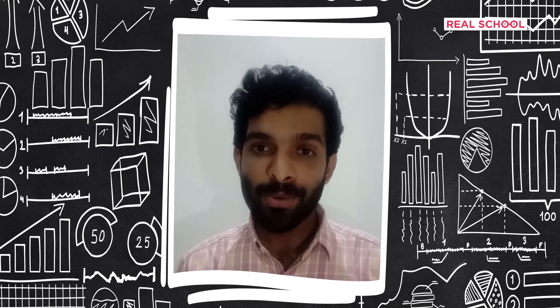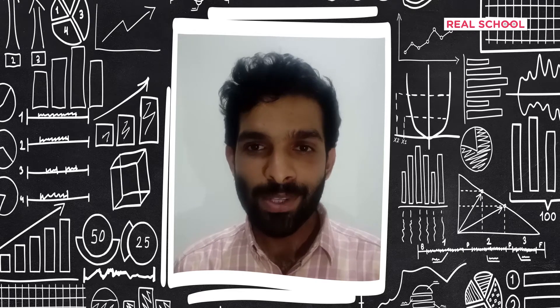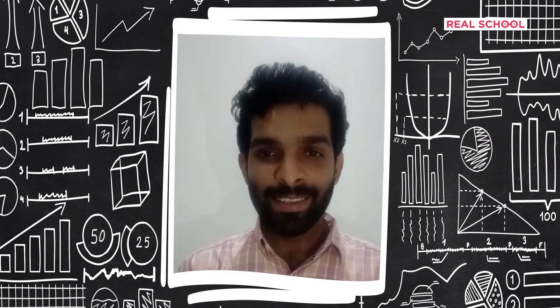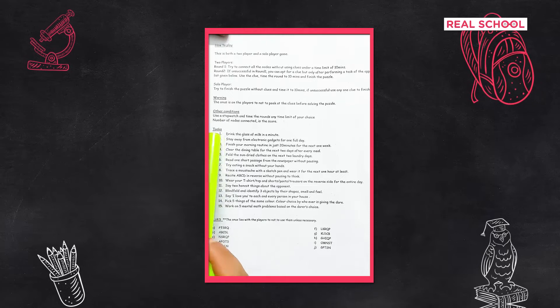There is also an option to use clues for round two. But to use a clue, there is a surprise twist in this game. If they say yes, give them a creative task from the list of tasks written down at the back of the printout.